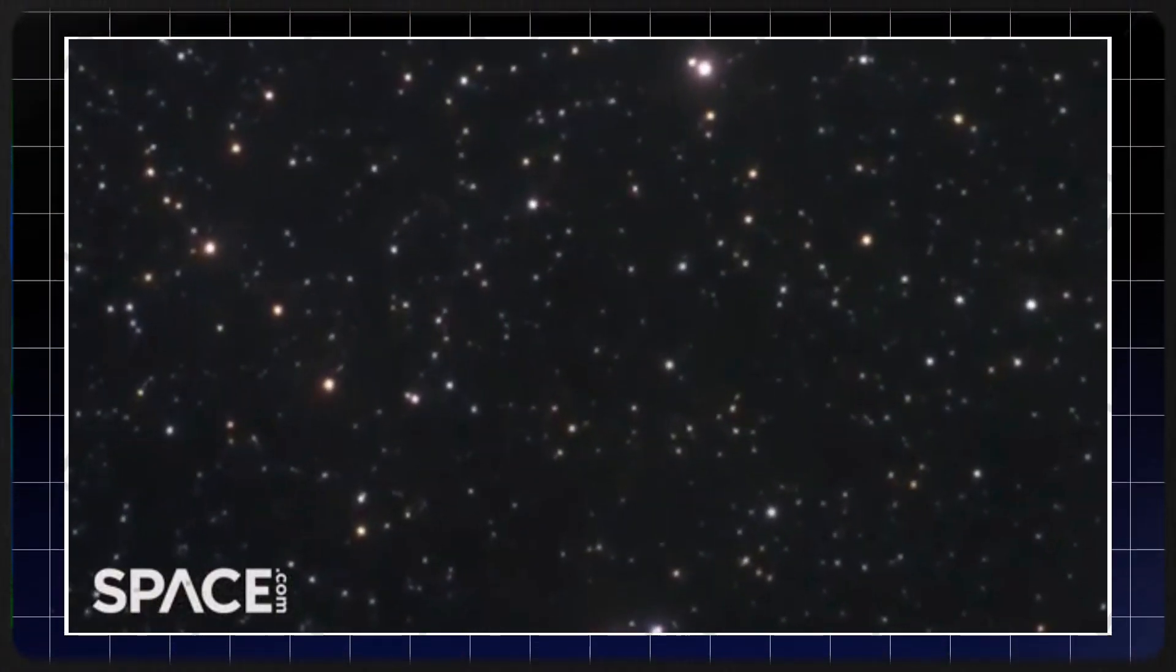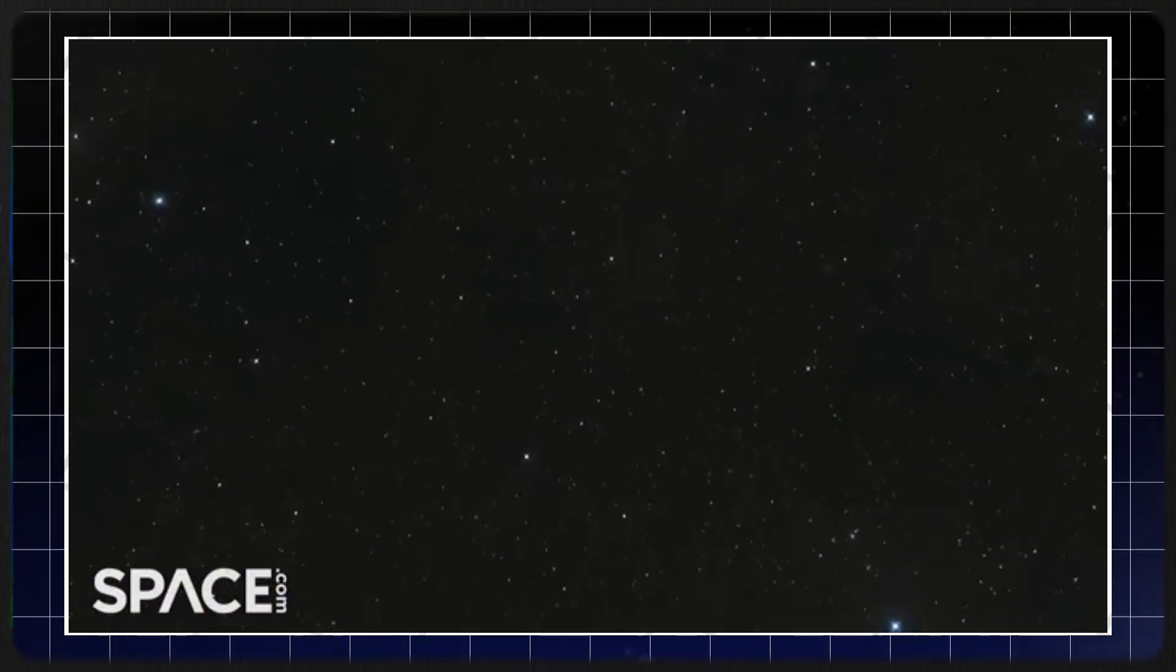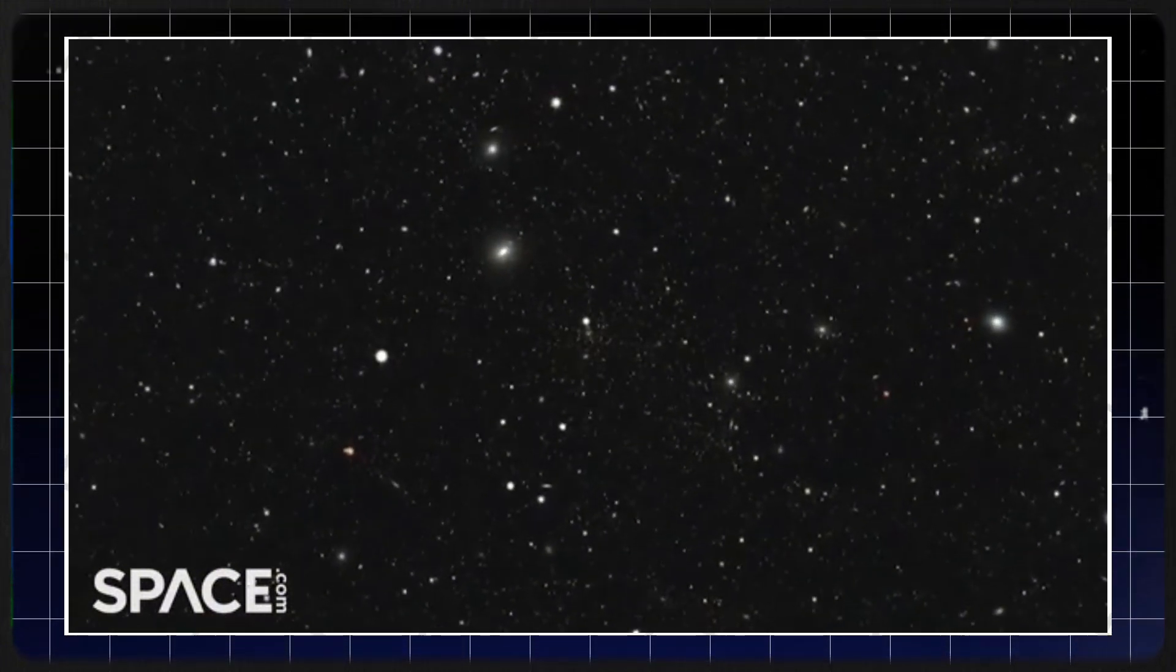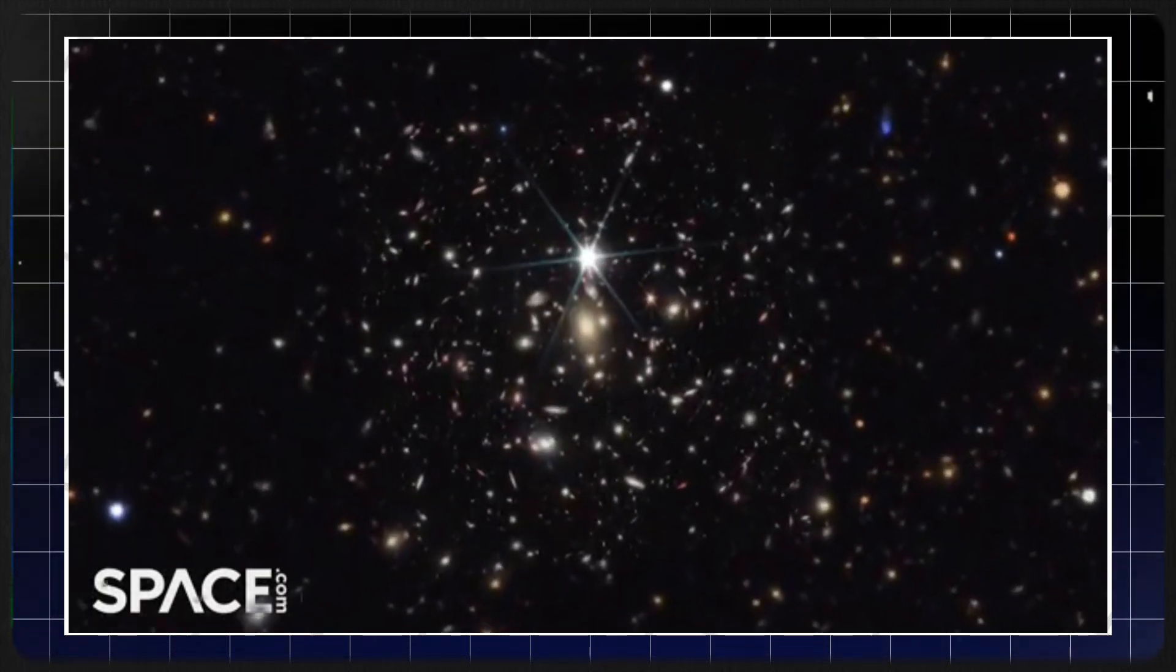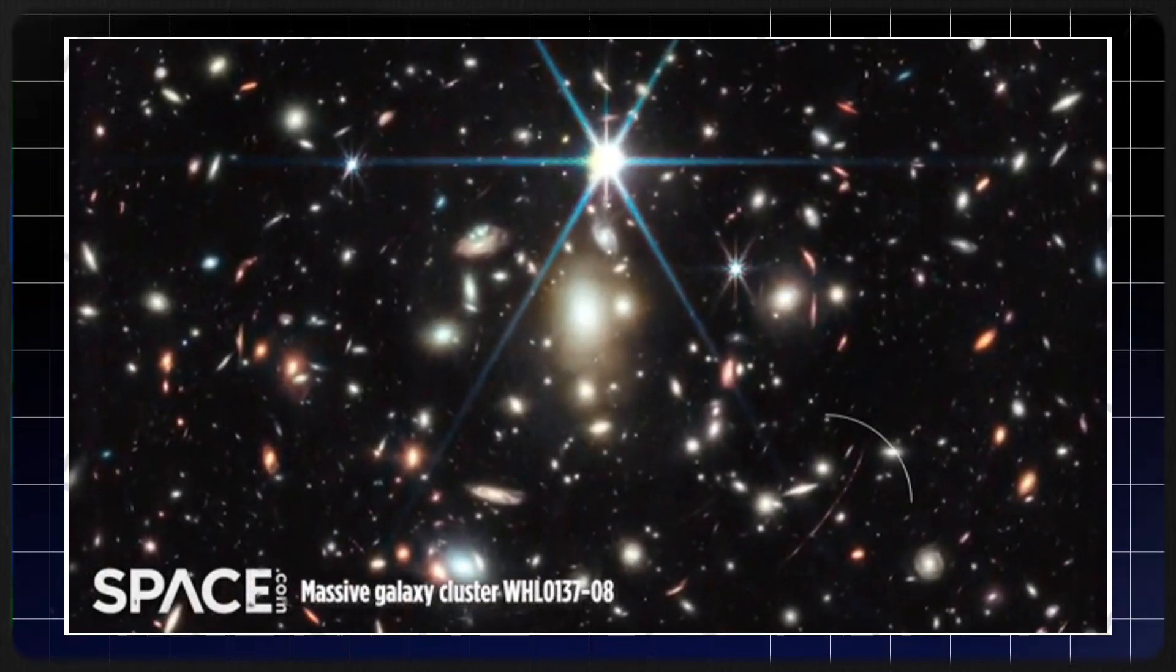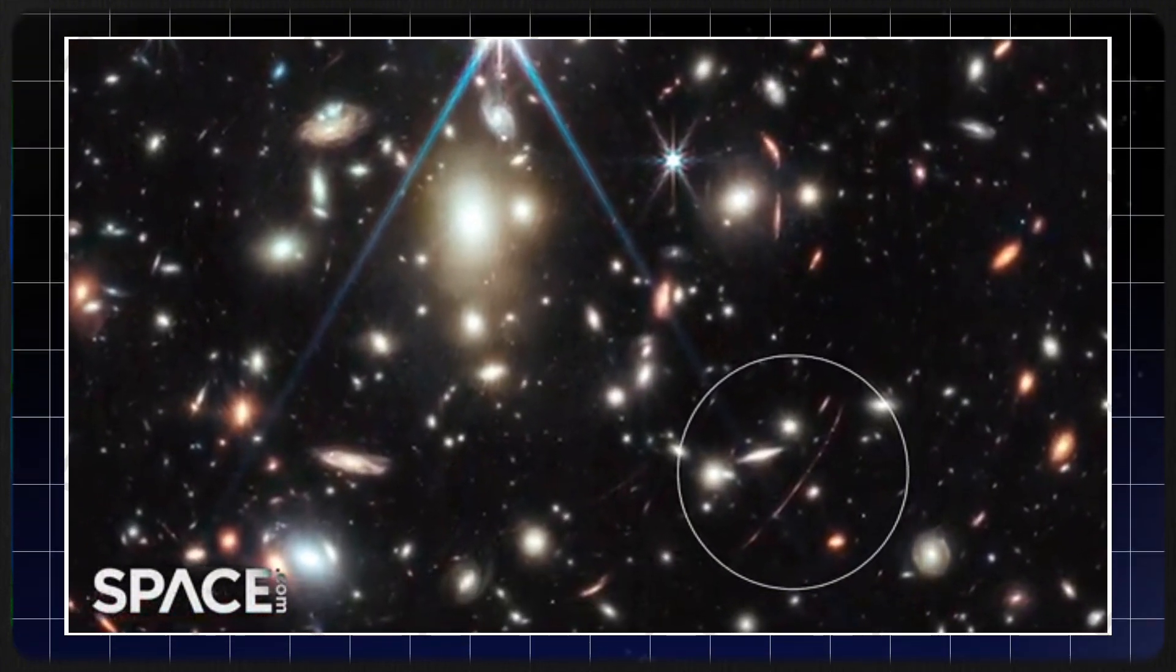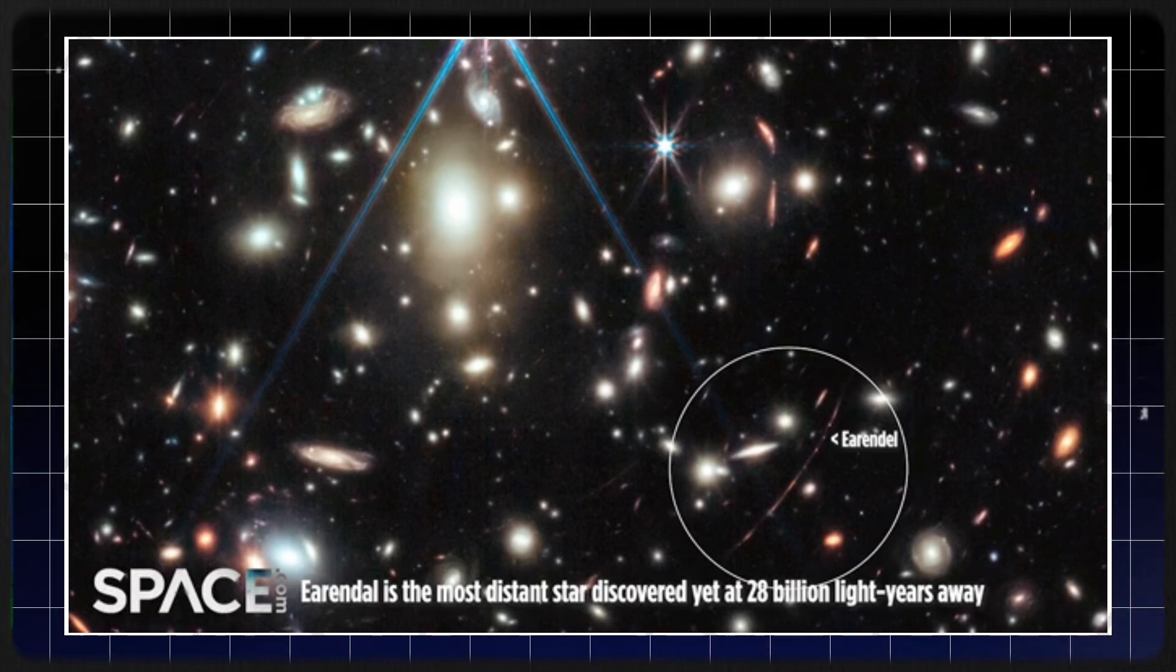One of the most extraordinary aspects of this discovery is that Eärendel, the most distant star ever observed, is visible independently of the galaxy it resides in, a truly rare and remarkable phenomenon. How is this possible? It all comes down to the fascinating power of a gravitational lens, a natural cosmic trick that demonstrates just how wild and wonderful the universe can be.